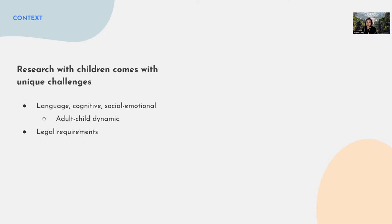There's also the adult-child dynamic to take note of. Kids might see adults as authority figures, and because of that they're afraid to be open and honest with their thoughts. You need to make sure you have enough time to make kids feel comfortable sharing their honest thoughts throughout the study. There are also a lot of legal constraints and requirements when working with kids — around data collection, data storage, and how you share data with stakeholders.